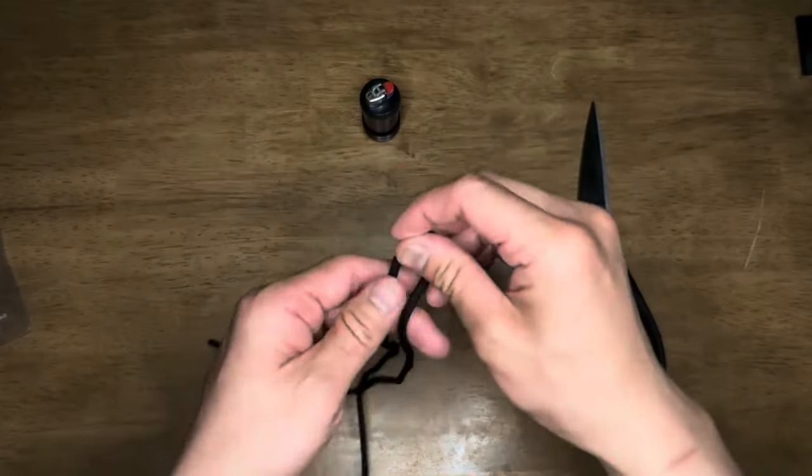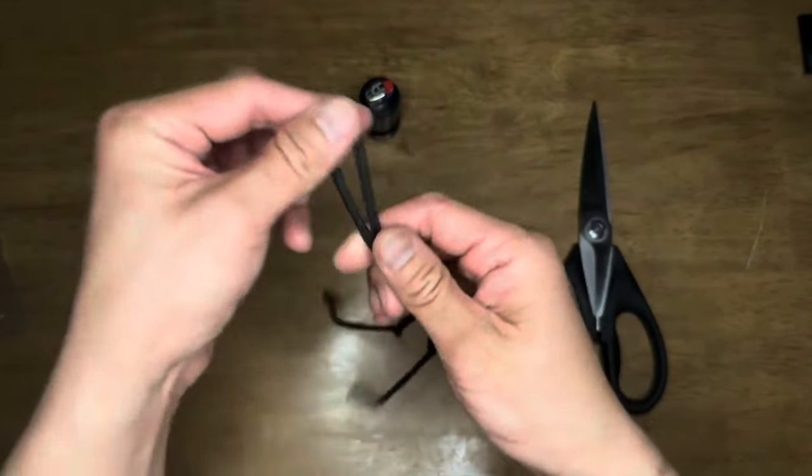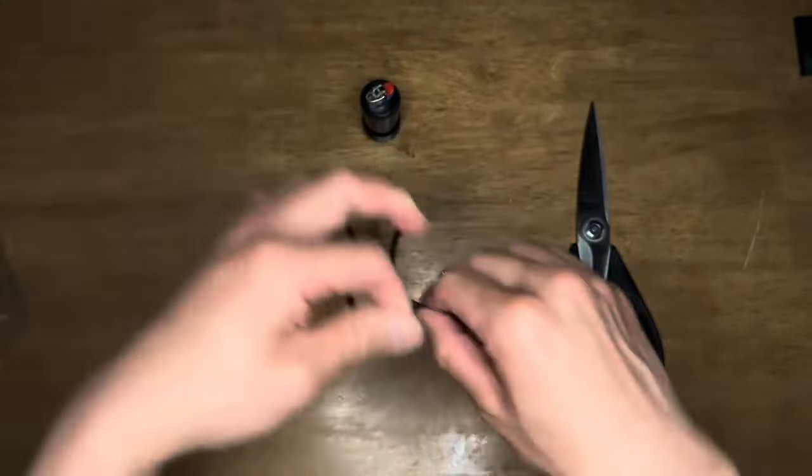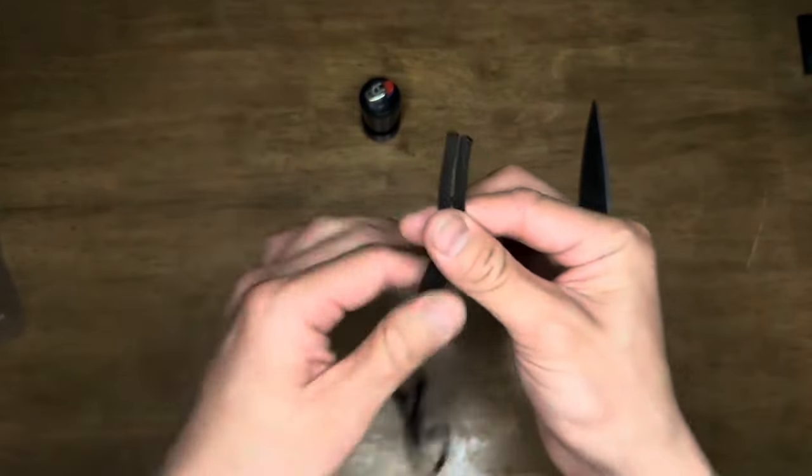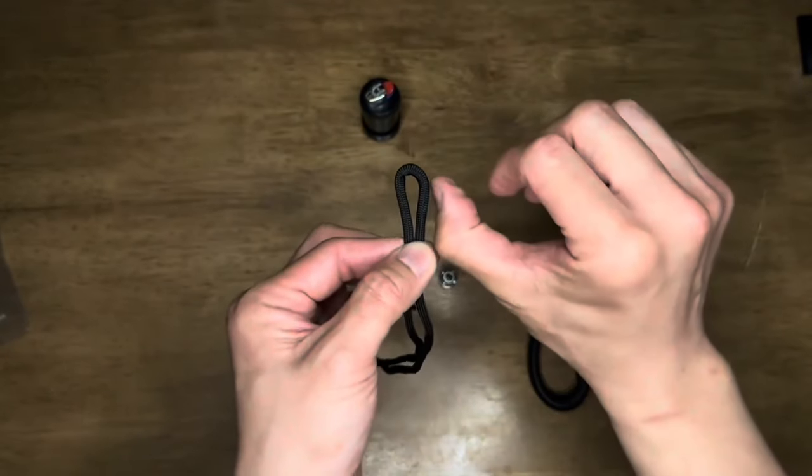To make your first knot, unravel your 550 paracord and find your center point. Keep about a 1 inch loop at the end.